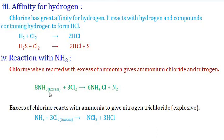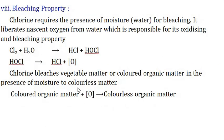Bleaching property of chlorine: chlorine requires the presence of moisture for bleaching. It liberates nascent oxygen from water, which is responsible for its oxidizing and bleaching property. Chlorine reacts with water to form HCl and hypochlorous acid (HClO); hypochlorous acid then gives HCl and nascent oxygen. This nascent oxygen decolourizes coloured organic matter, turning it colourless.